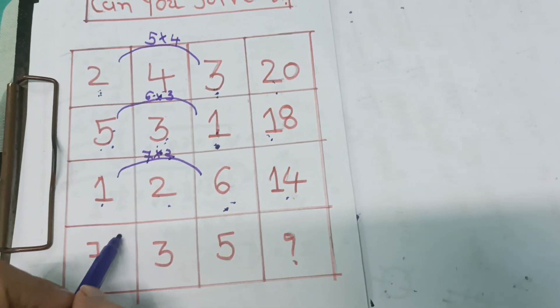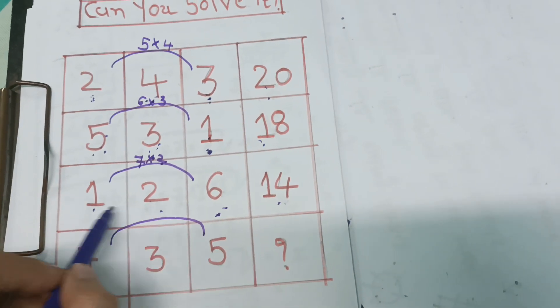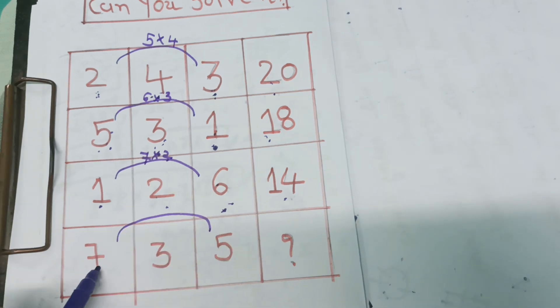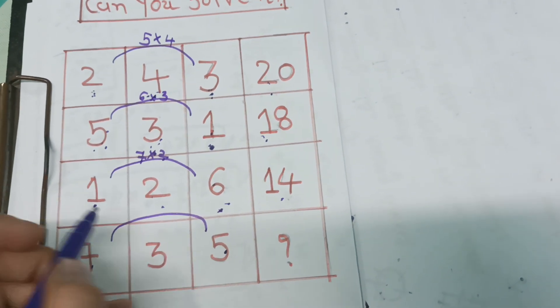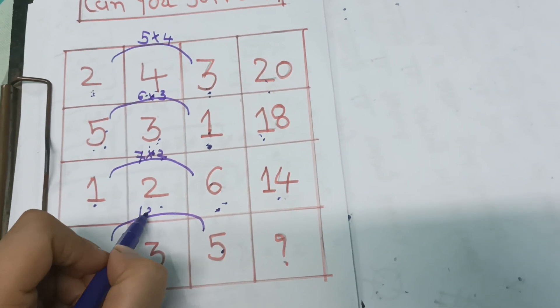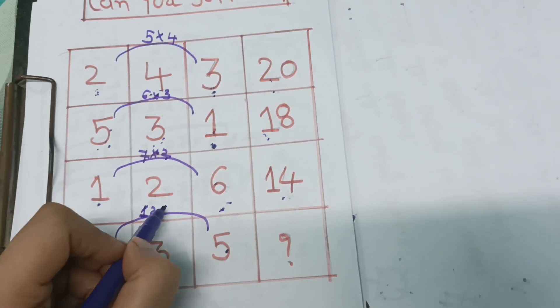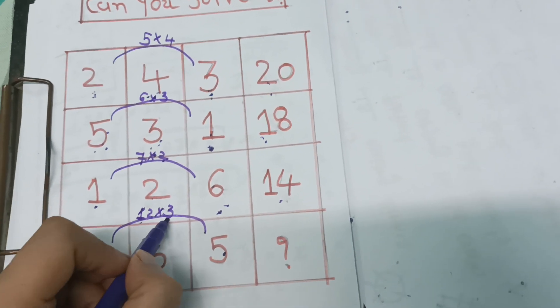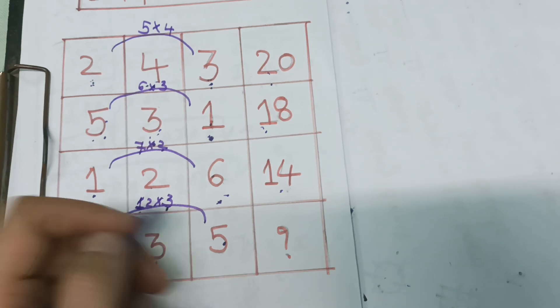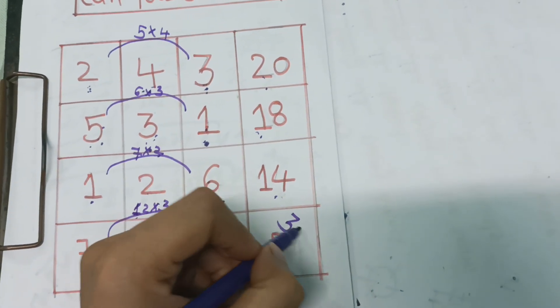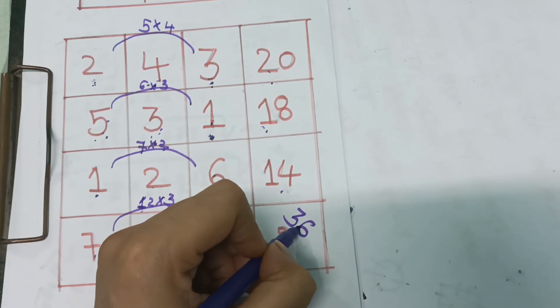So what will be the answer? 7 plus 5, that is 12, and 12 threes are 36. So the answer is 36.